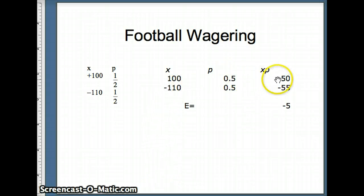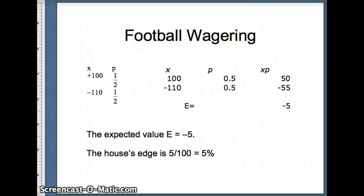There's our expected value. 100 times 0.5 is 50. Negative 110 times 0.5 is negative 55. Adding those together, the expected value for this game is minus 5. For every $100 you spend, you can expect to lose $5. The house's edge this time is 5 out of $100 or 5%. In football wagering, for every dollar that you gamble, the house can expect to keep 5 cents.